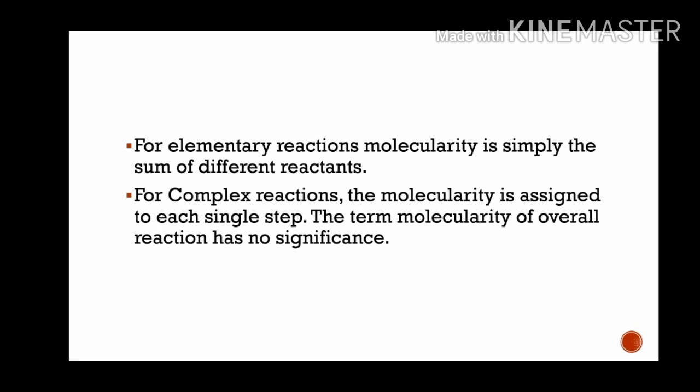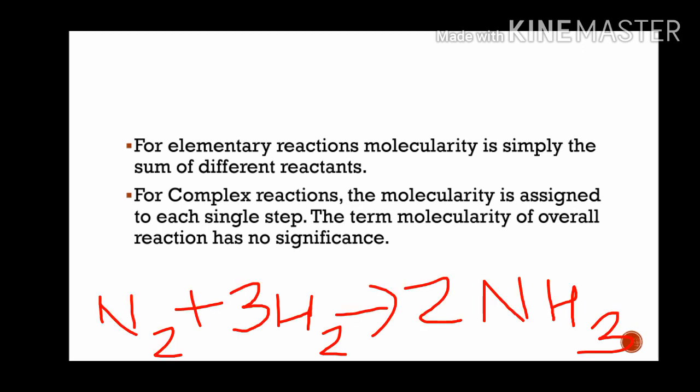For example, ammonia formation: N2 plus 3H2 giving 2NH3. You can see 4 molecules are involved. But this is not an elementary reaction — it is a complex reaction. For complex reactions, we do not assign molecularity to the overall reaction; it only applies to each individual elementary step.